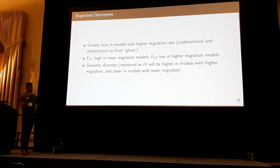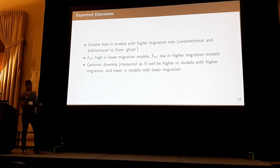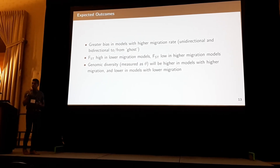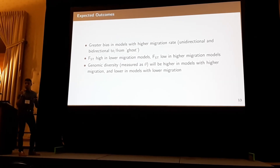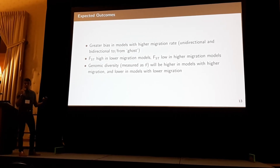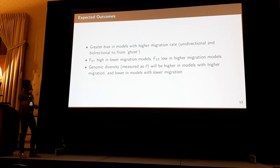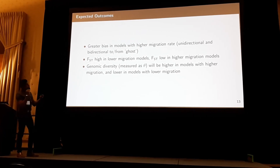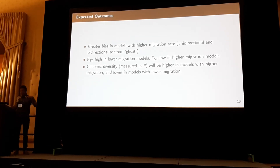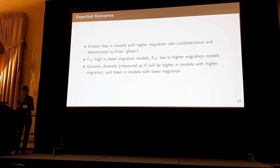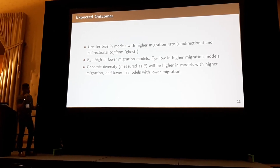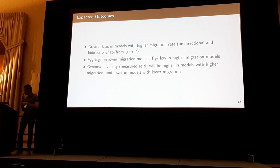The expectation is that there would be greater bias in estimates if you have lots of gene flow from unsampled ghost populations that you've completely ignored in your model. We would expect FST estimates to be higher in sampled populations with lower migration, whereas with higher migration it would be lower. Similarly, genomic diversity measured as theta would be higher in populations with higher migration rates and lower with lower migration rates.